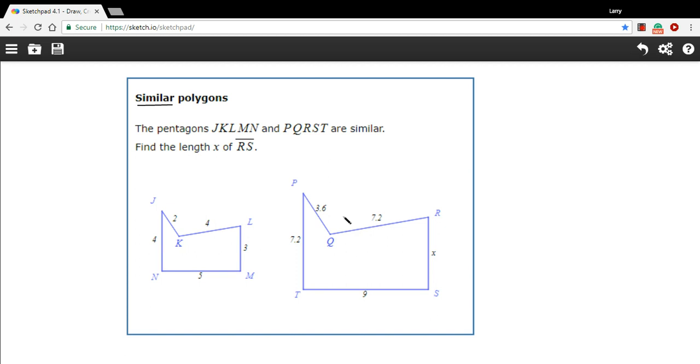To solve a problem like this, they're asking us, what is this side here, x? And what we want to do is find the side that corresponds. So side rs corresponds to side lm. So that is a length of 3. And then we want to find two other sides that correspond. And I'm just going to pick this jn and pt.